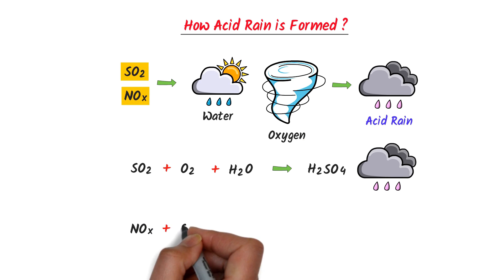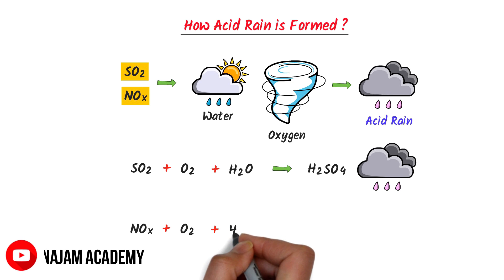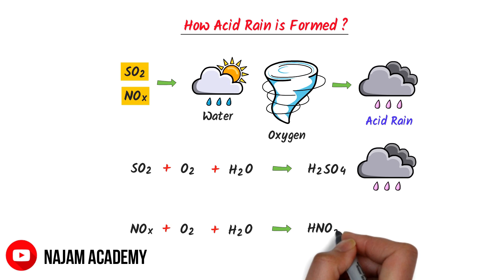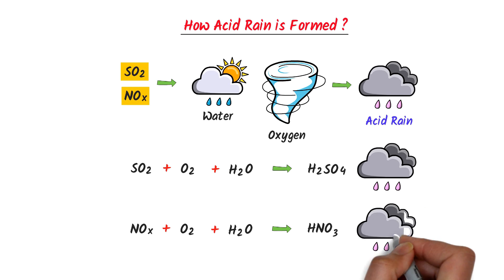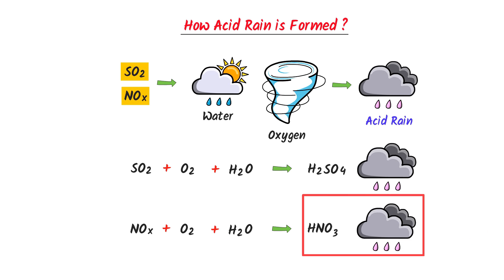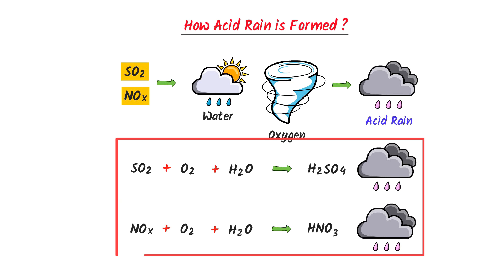Secondly, when oxides of nitrogen react with atmospheric oxygen and rainwater, it forms nitric acid, HNO3. So this is not pure rainfall because it contains acid like HNO3 — that's why we call this rainfall acid rain. Therefore, acid rain is formed when sulfur dioxide and oxides of nitrogen react with oxygen and rainwater.